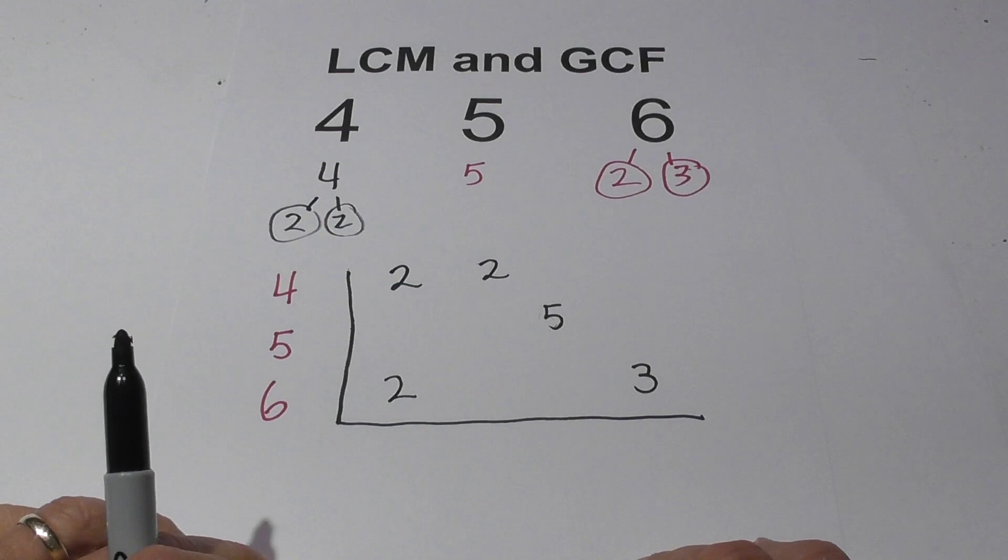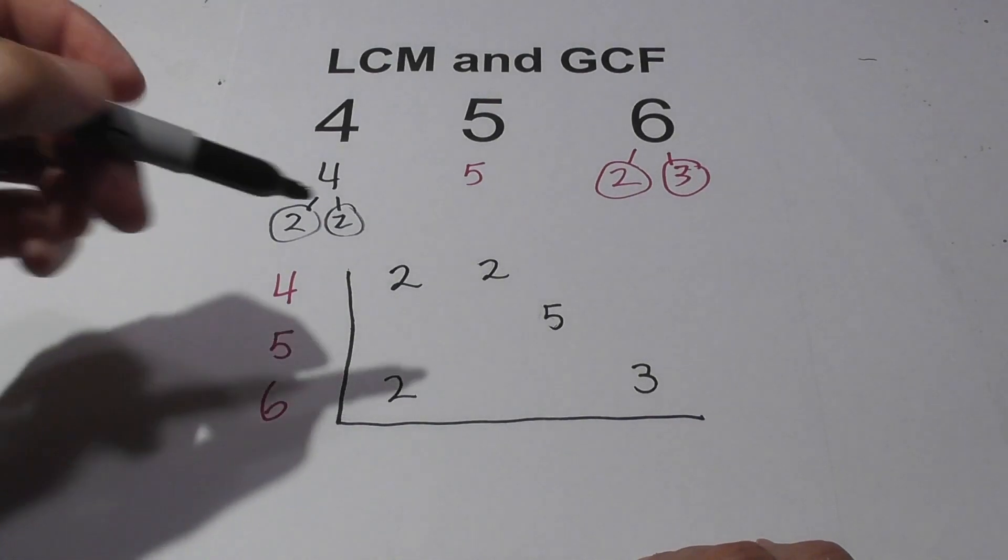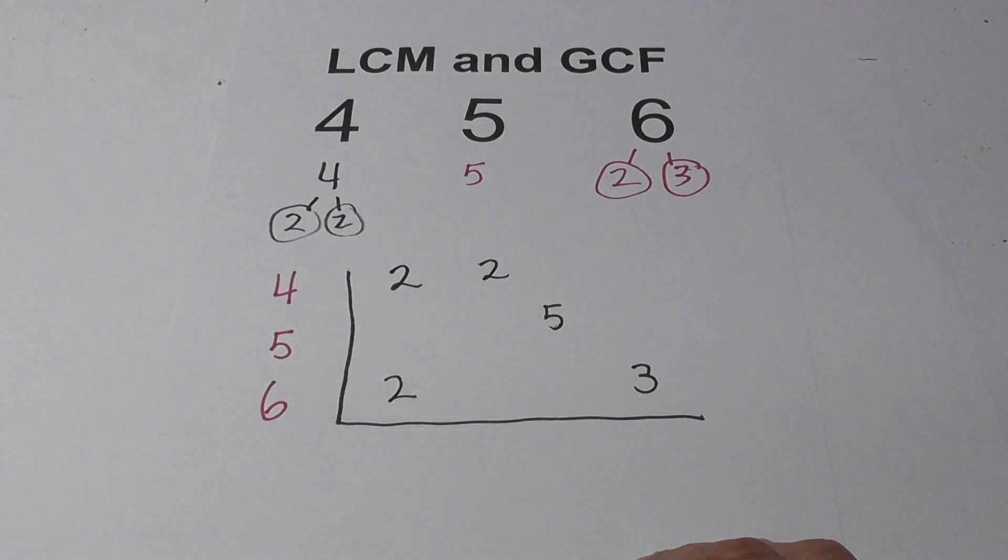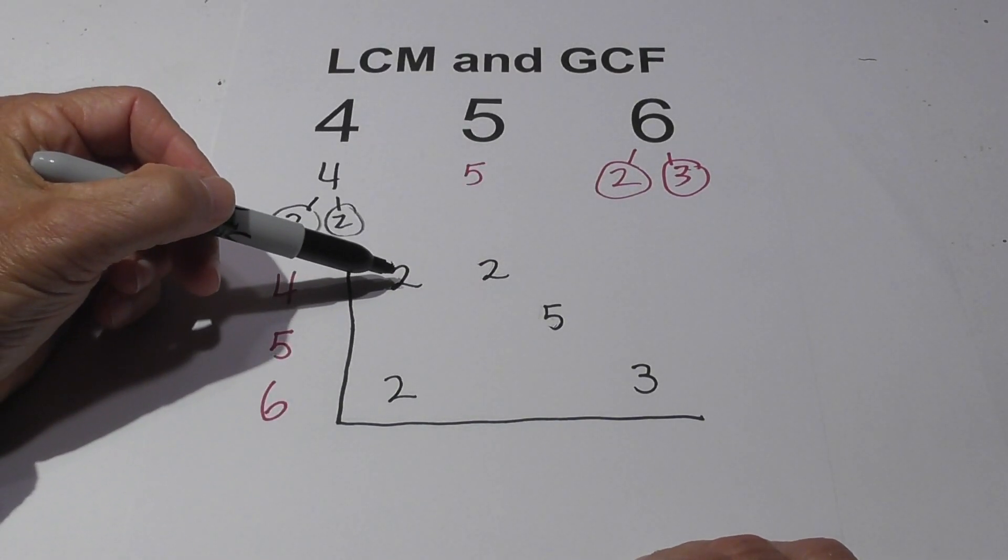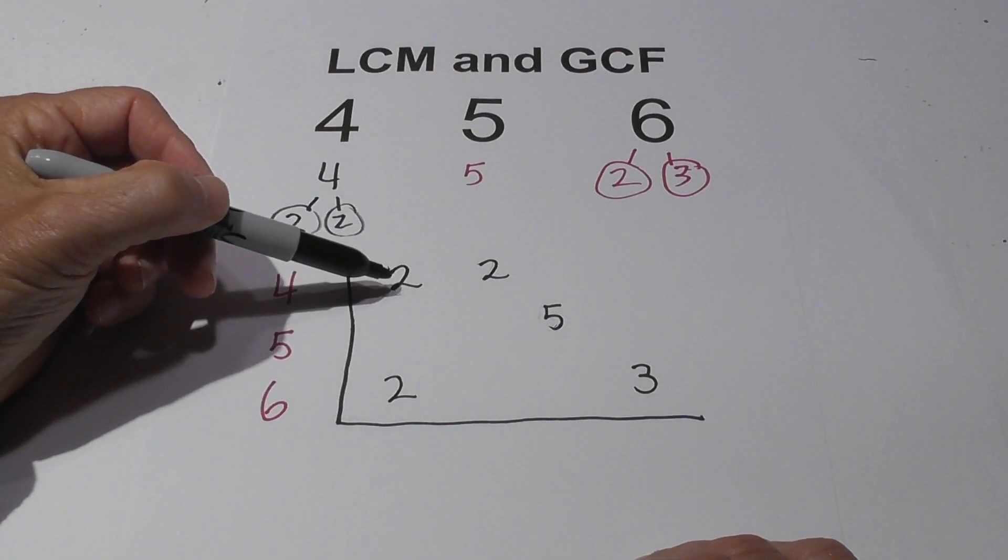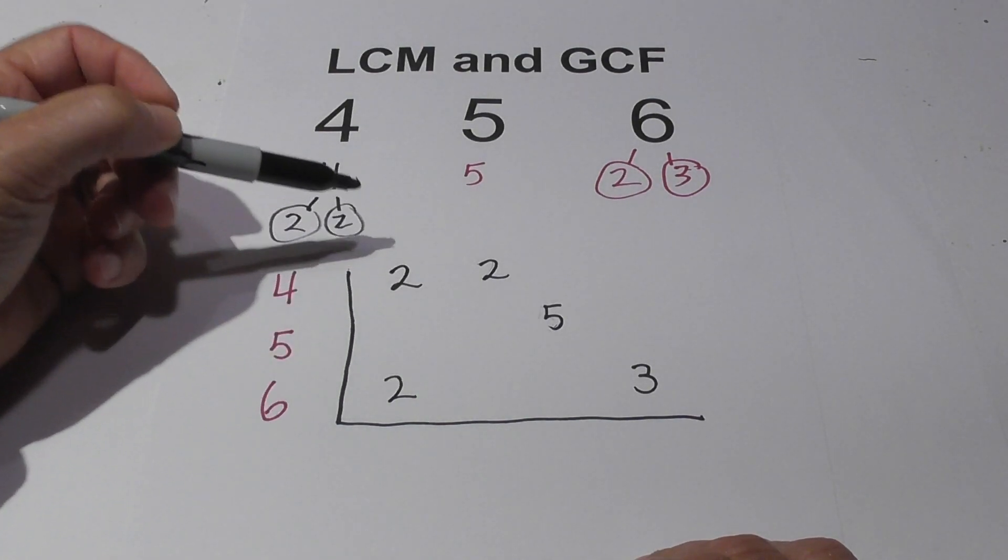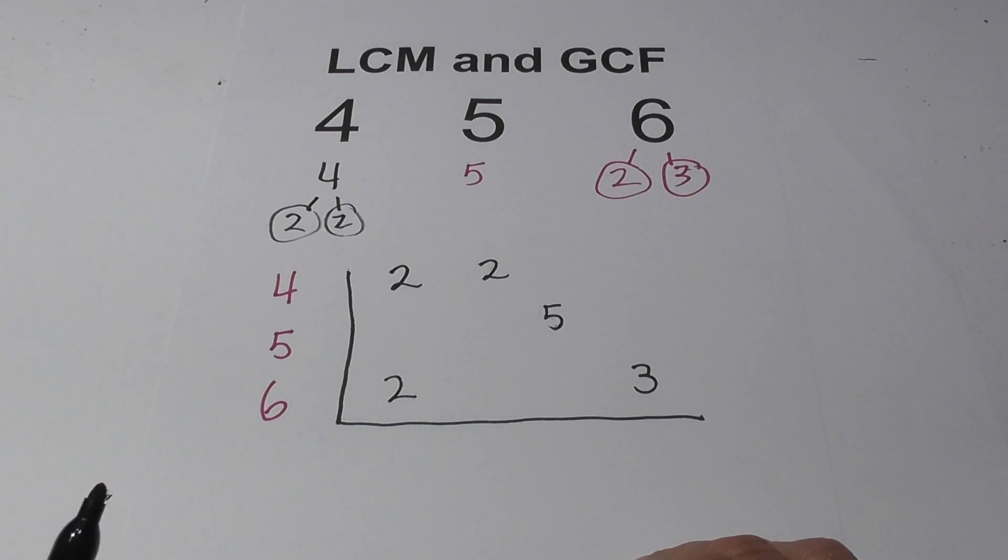Okay, now what I do for the LCM is I bring down all the numbers and multiply them together. However, since I have three numbers, if I have two or three numbers that are the same, then I just multiply one time.